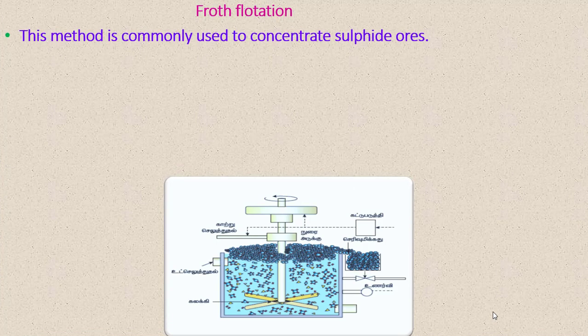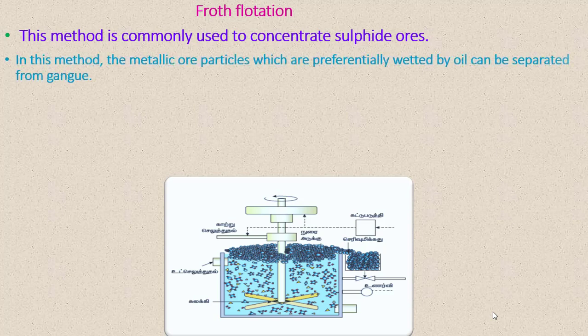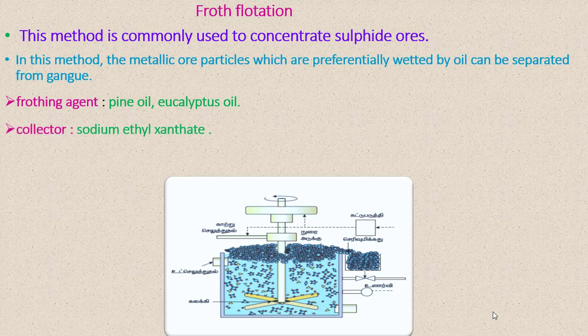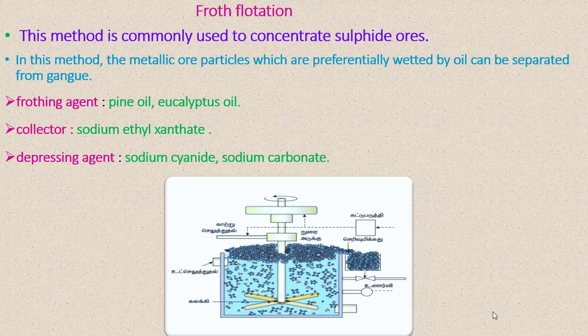The froth flotation method is commonly used for concentration of sulfide ores. In this method, the metallic ore particles which are preferentially wetted by oil can be separated from the gangue particles. Frothing agents such as pine oil and eucalyptus oil are used. Collectors such as sodium ethyl xanthate act as a collector.